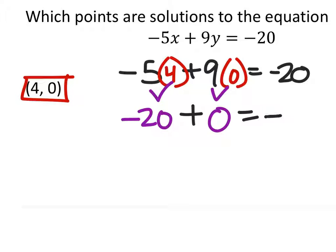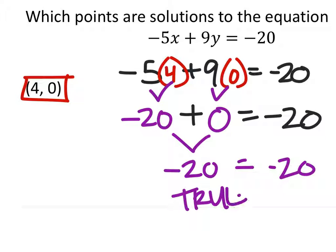That should equal negative 20. If it's true, then it's a solution. Negative 20 plus 0 is negative 20, which does equal negative 20. So this one is true. Therefore, this is a solution.